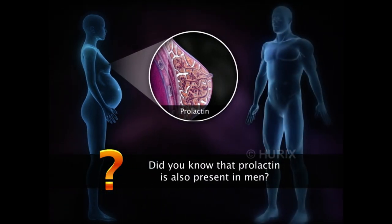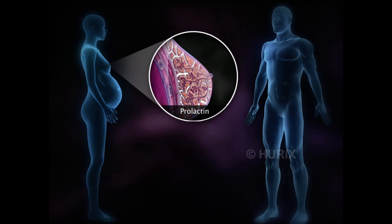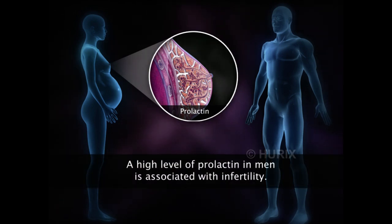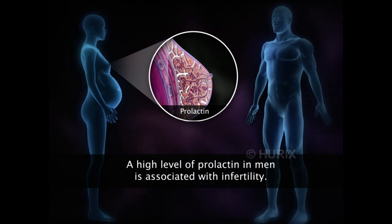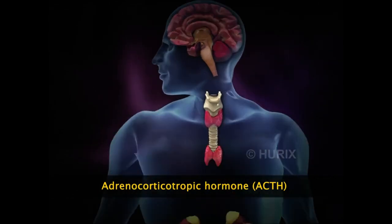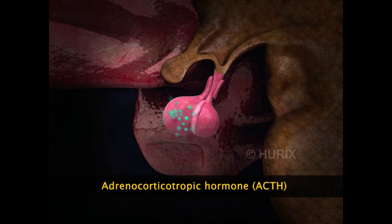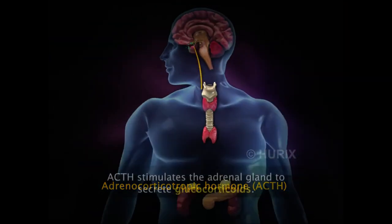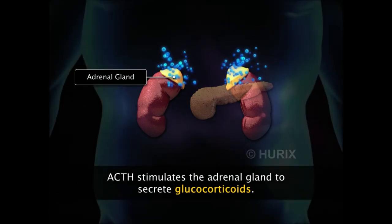Prolactin, which induces milk secretion in the mammary glands, is also present in men. However, its role in men is not clearly understood. Scientists have observed a direct relation between increasing prolactin levels and infertility in men. Another hormone of the anterior pituitary is adrenocorticotropic hormone, ACTH or corticotropin. ACTH stimulates the adrenal gland to synthesize glucocorticoids.